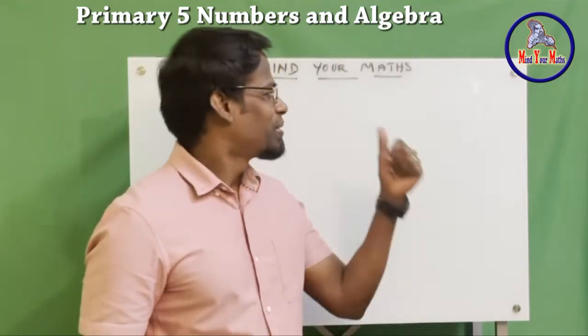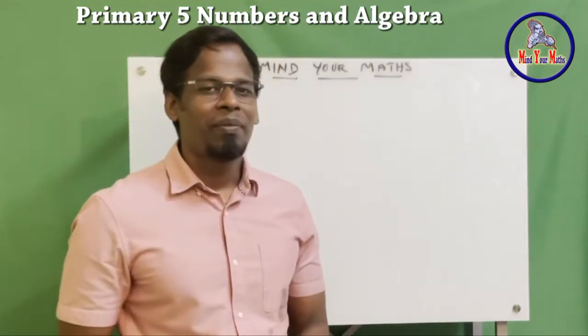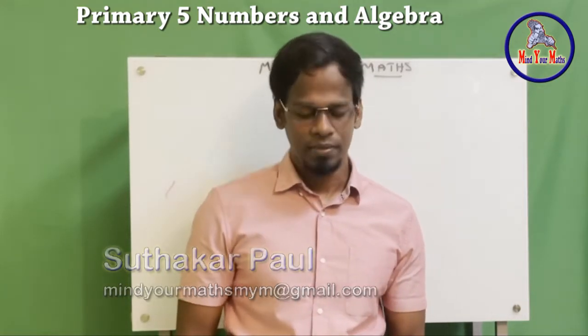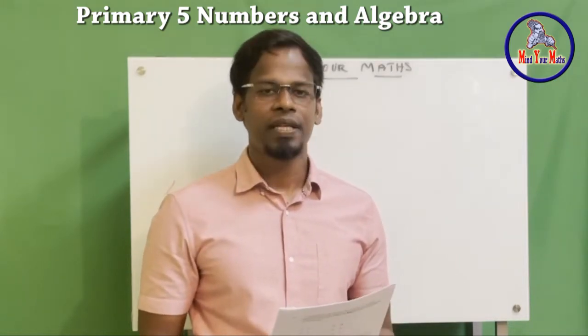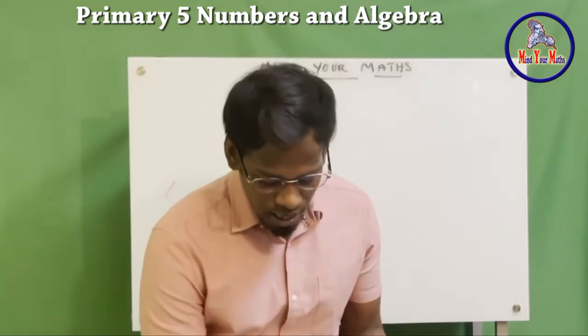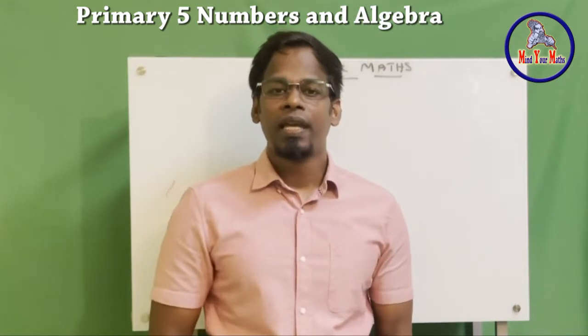Hey guys, welcome to Mind Your Maths. In our series of solving primary five test paper problems, we will solve the next one. During a sale, Mrs. Kumar purchased five rings and four bracelets for $825. She found that she could purchase three rings, two bracelets, and five gold chains with the same amount of money. Find the cost of each ring if one gold chain costs $70.